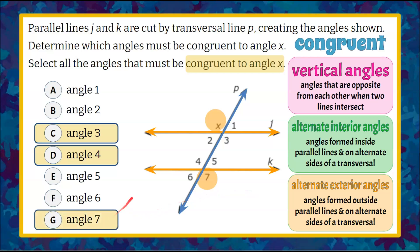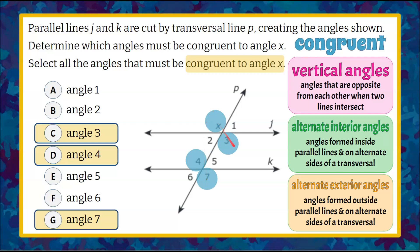So we know that angles 3, 4, and 7 are all congruent to angle X. And there you have it — X, 3, 4, and 7. You can see this zigzag pattern. These are all the same angle measure.